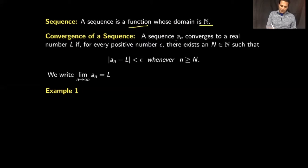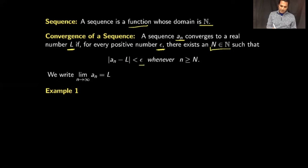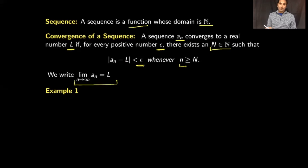When we say that a sequence a_n converges to a number L, for every epsilon positive we can always find a natural number N so that the distance between the general term of the sequence and L is less than epsilon, whenever little n is bigger than or equal to that capital N. If the sequence converges, we write: limit as n approaches infinity of a_n equals L.